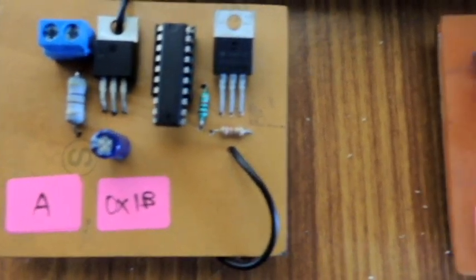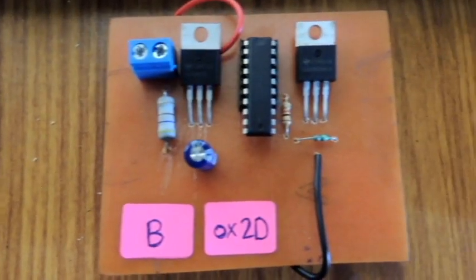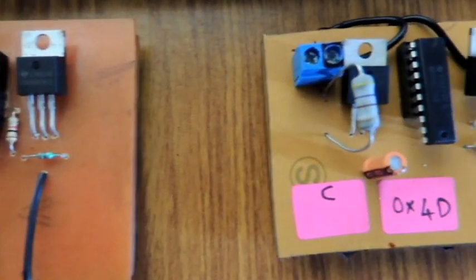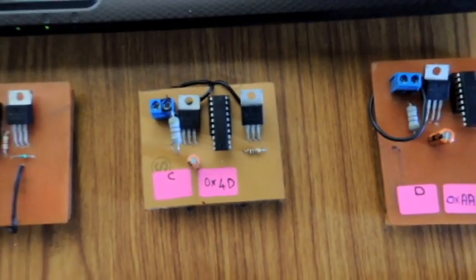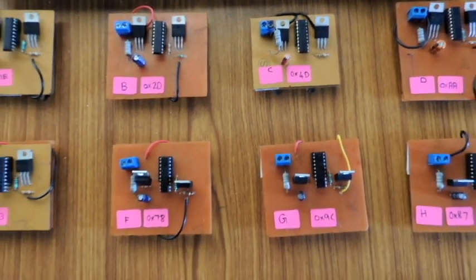We fabricated 12 identical transmitters and assigned them unique 8-bit IDs derived based on hamming code techniques. We codenamed them with alphabets from A to L.